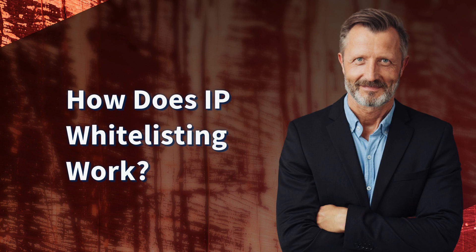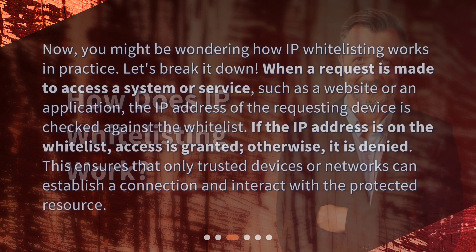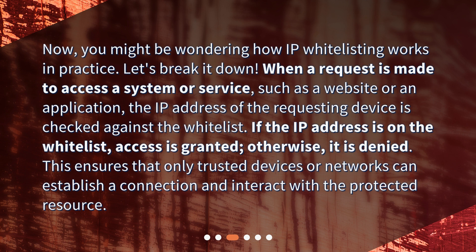How does IP whitelisting work? You might be wondering how IP whitelisting works in practice. When a request is made to access a system or service, such as a website or an application, the IP address of the requesting device is checked against the whitelist. If the IP address is on the whitelist, access is granted; otherwise, it is denied. This ensures that only trusted devices or networks can establish a connection and interact with the protected resource.